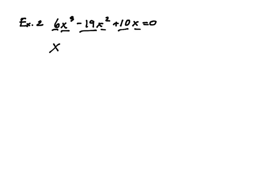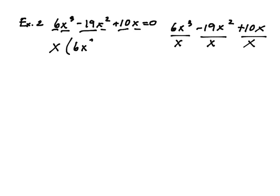So let's go ahead and factor out an X. If you don't understand what that means to factor something out, so we have 6X cubed minus 19X squared plus 10X. What we're actually doing is we're dividing everything by X in order to pull it out.